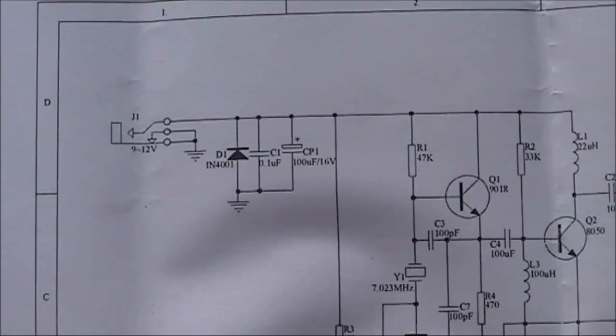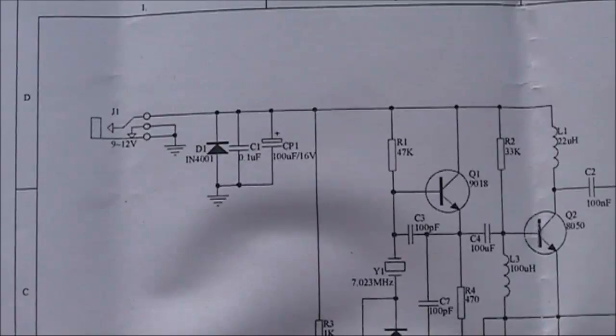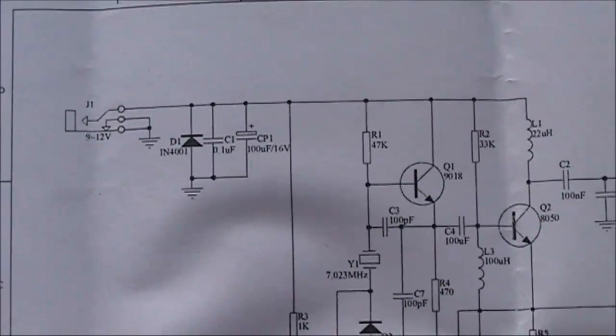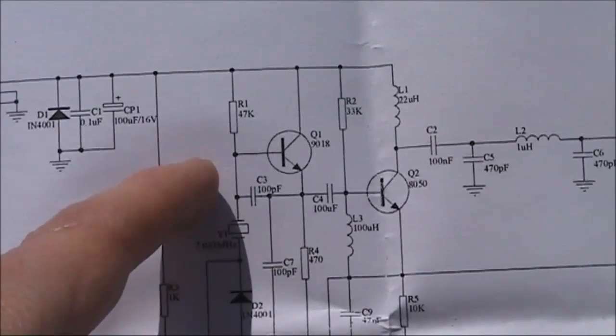Just going through the important parts of the Pixie circuit. In the top left is the power socket and the reverse polarity protection diodes. Q1 is a 7MHz crystal oscillator.